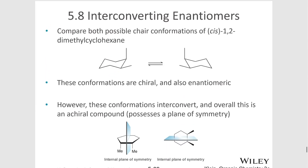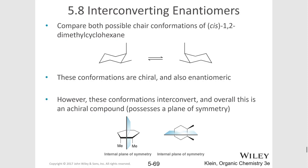You might also think the same thing about cyclohexane. For example, these methyl groups don't stick straight up or straight down. The conformations are actually mirror images of each other. But by being able to interconvert from one to the other at room temperature via a ring flip, that makes the dimethylcyclohexane achiral. And it does possess a plane of symmetry, essentially because of this interconversion that happens at room temperature.